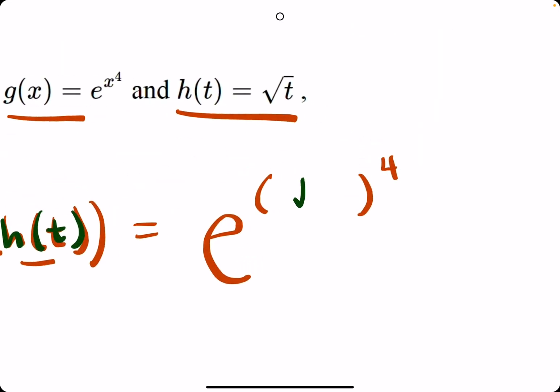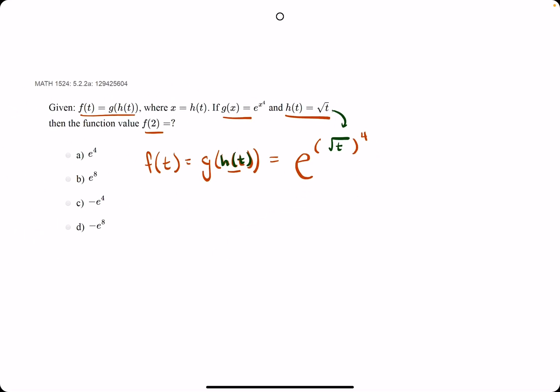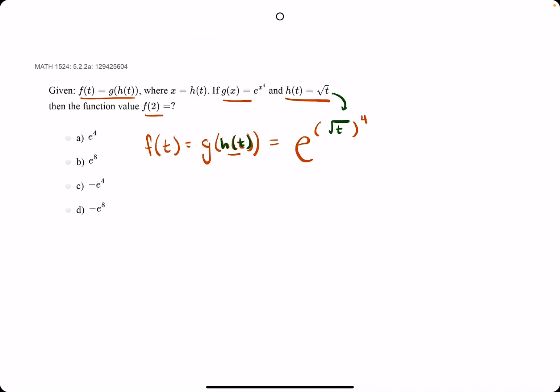we're going to plug in h of t. So h of t is the square root of t. So we plug in square root of t, and we have e to the square root of t to the fourth.